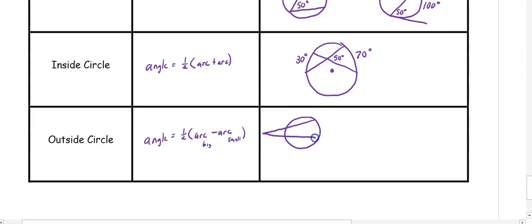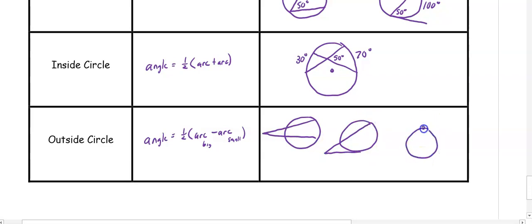The outside-circle configuration can appear in three different visual forms.